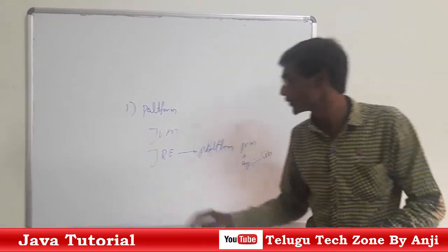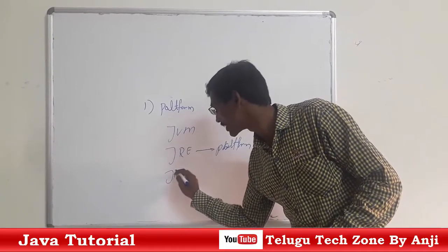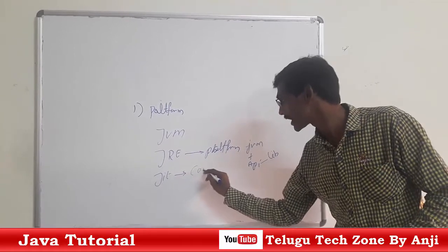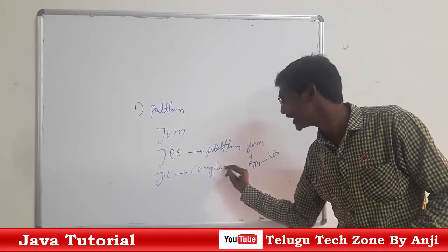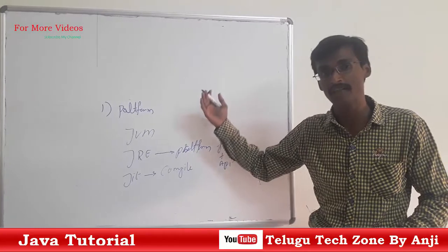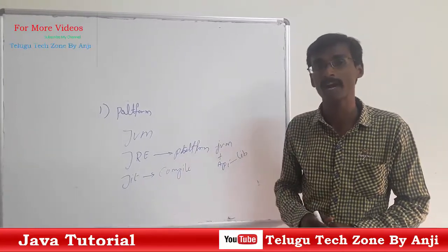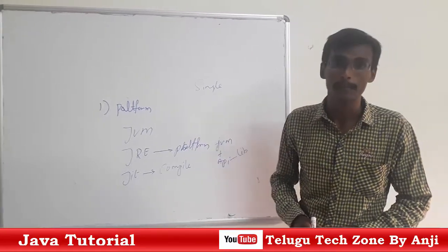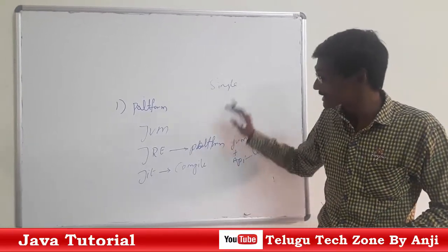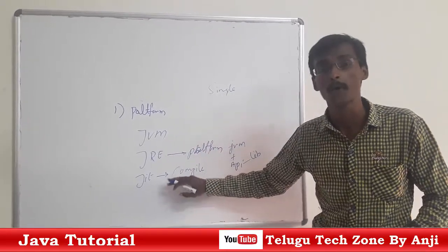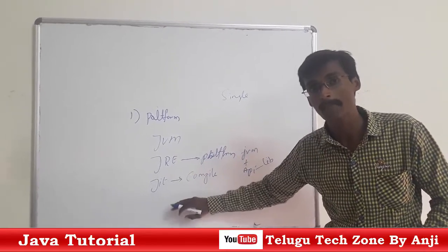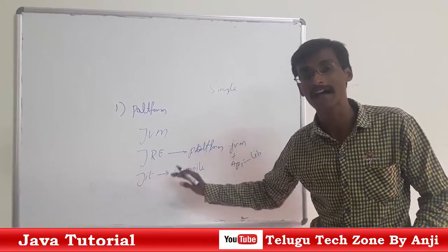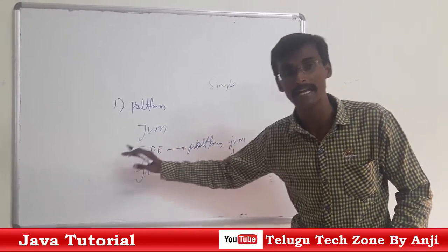Another major component is JIT. JIT stands for Just in Time and is also called a Compiler. A compiler converts high level language to machine level language in a single step. JIT converts a program and stores the data in byte format and loads it several times whenever we need.